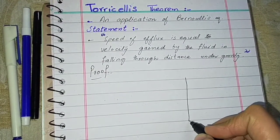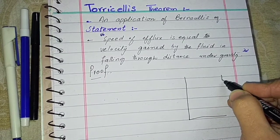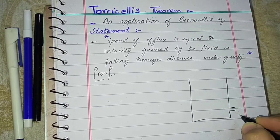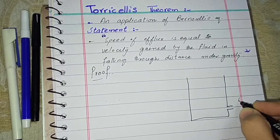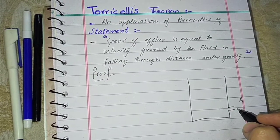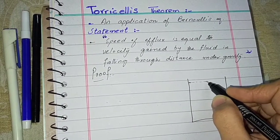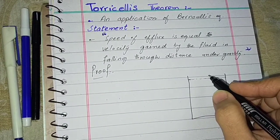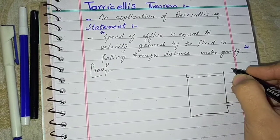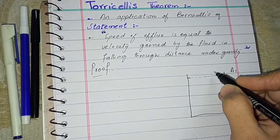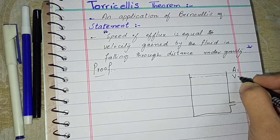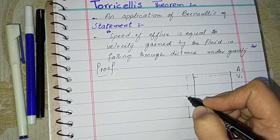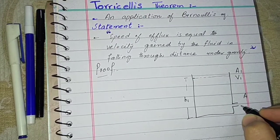Now we draw the proof for this. Let's suppose we have a very big water tank, and this water tank has a hole in the bottom. This hole is known as hole A. We have two openings: a top opening and a bottom opening. The tank is filled with liquid and fluid.